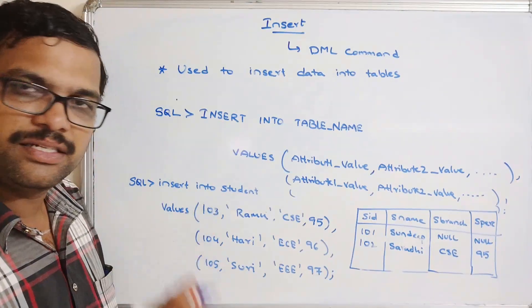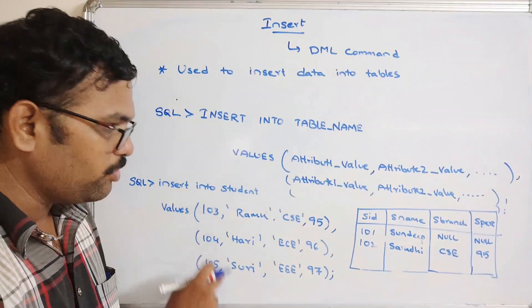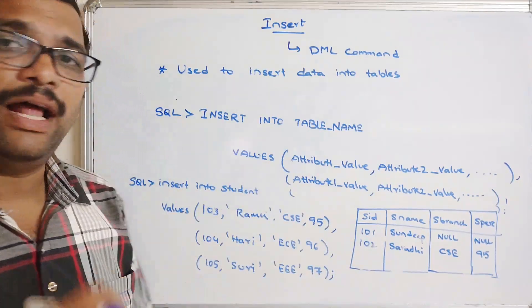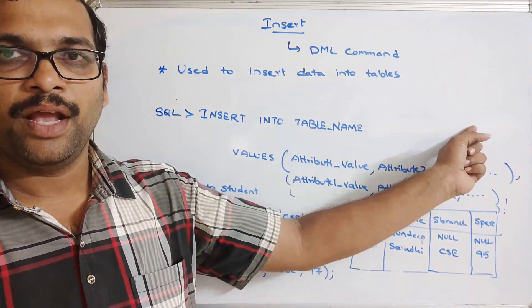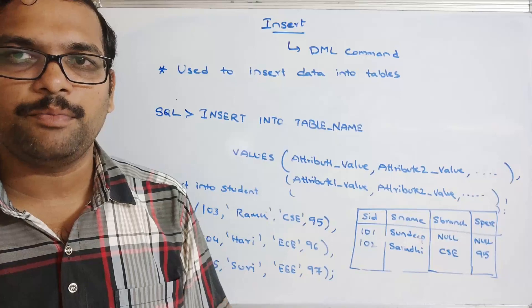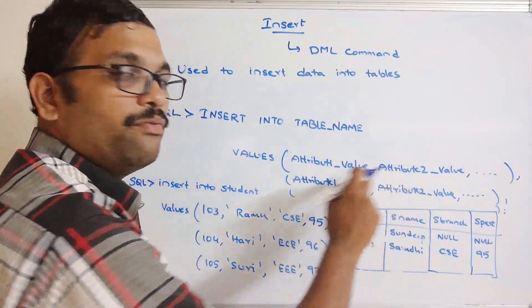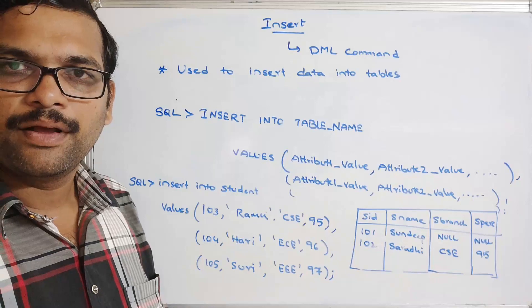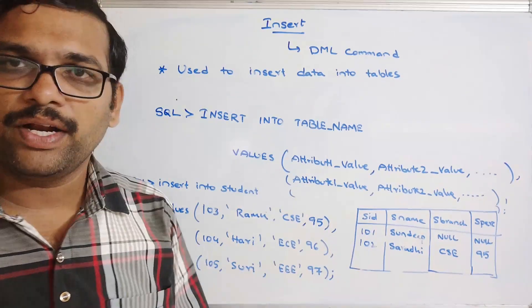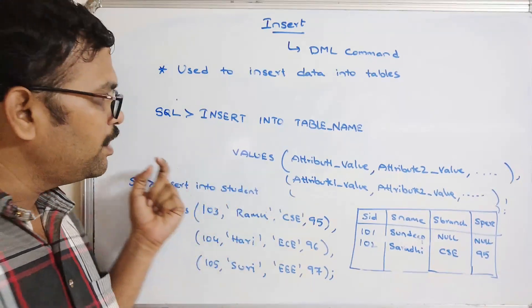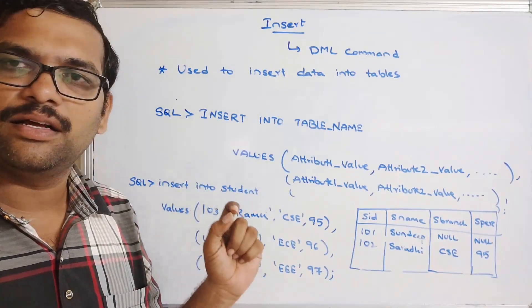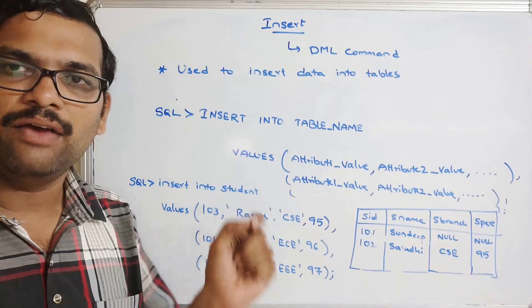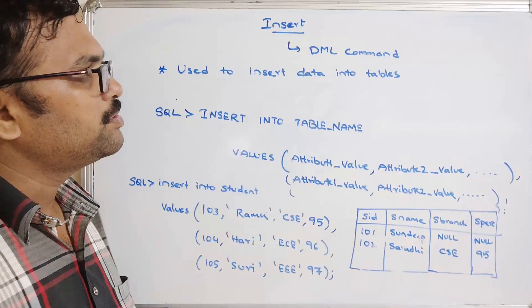If you want to give values for all attributes, you don't need to mention attribute names. If you want to insert values for specific attributes, you must mention those attribute names. This rule applies whether it is single-row or multiple-row insertion. I will execute each case — specific attributes, all attributes, single row, and multiple rows — in MySQL.